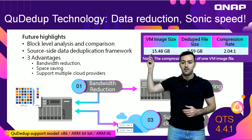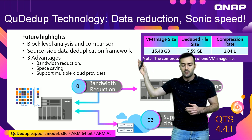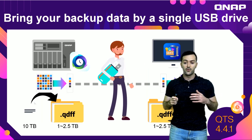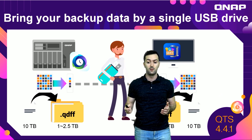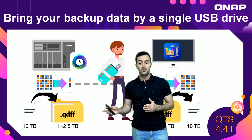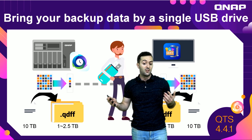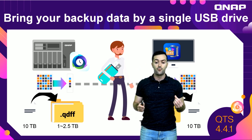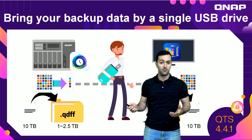As you can see here, the VM image size versus the dedupe file size shows a big difference — almost half. You can bring your backup data on a single USB drive. For example, from 10 terabytes, the QDFF file extension format reduces it to around 2.5 terabytes, so you can transfer it via USB from one NAS to another and easily access it.